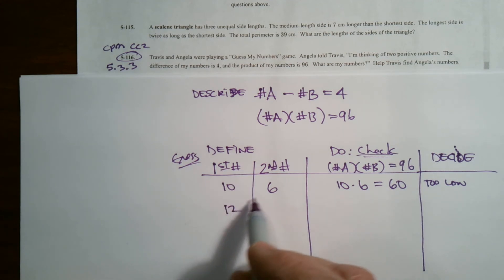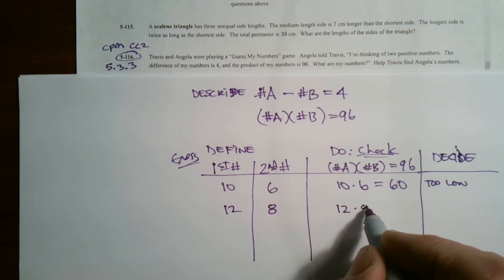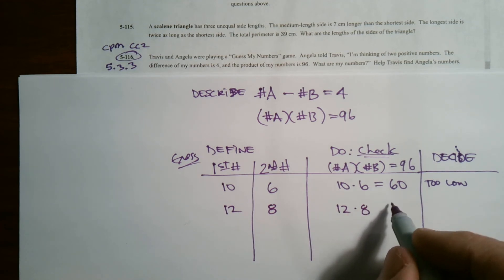So let's try 12. So 12, if I pick 12, the difference between 12 and minus 4 now is 8. So 12 minus 4 is 8. So let's check it. 12 times 8. Well, 12 times 8 is, oh, look at that, 96. So that's it.